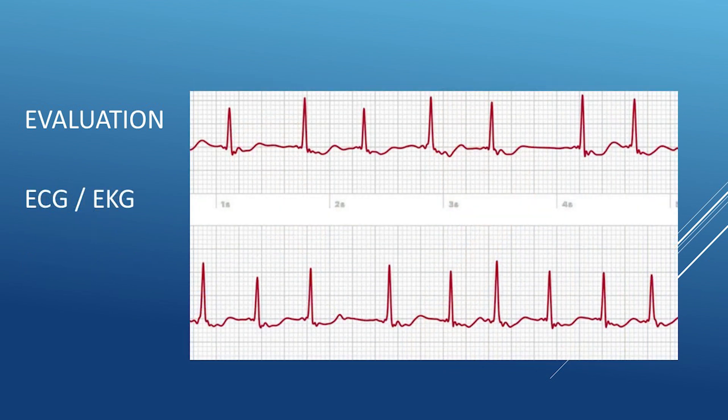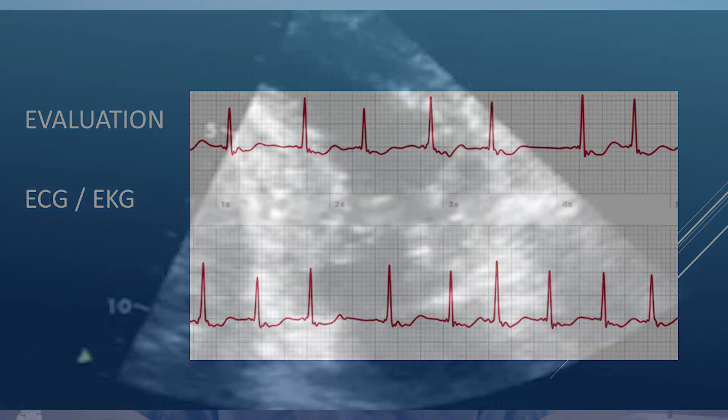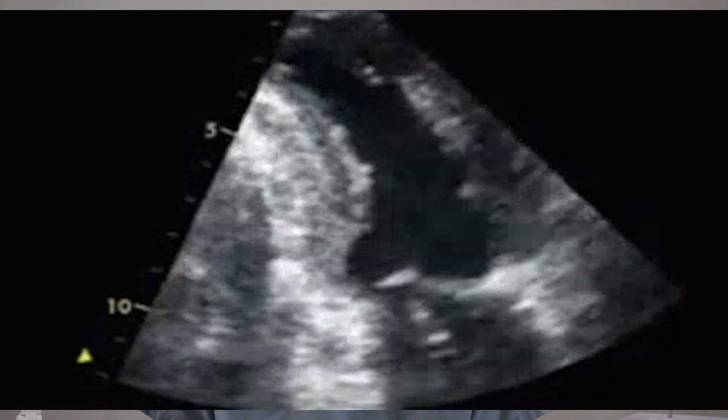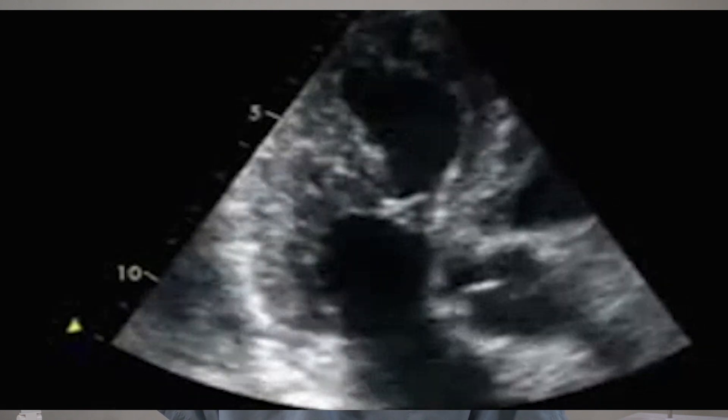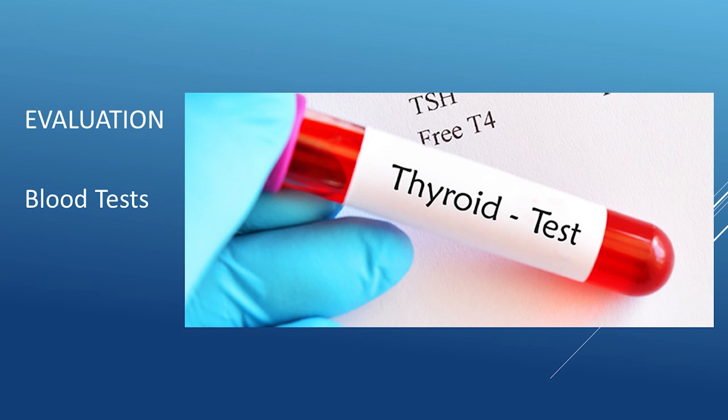To diagnose atrial fibrillation, we get an electrocardiogram to document the irregular heartbeat, as shown here. We get an ultrasound scan of the heart known as an echocardiogram to evaluate the size of the heart chambers and to detect possible valvular heart disease. Sometimes we perform a transesophageal echocardiogram, similar to performing an endoscopy procedure, to look at the heart from behind and look for clots forming in the upper left part of the heart. We also request blood tests, especially looking for thyroid function and electrolyte abnormalities.